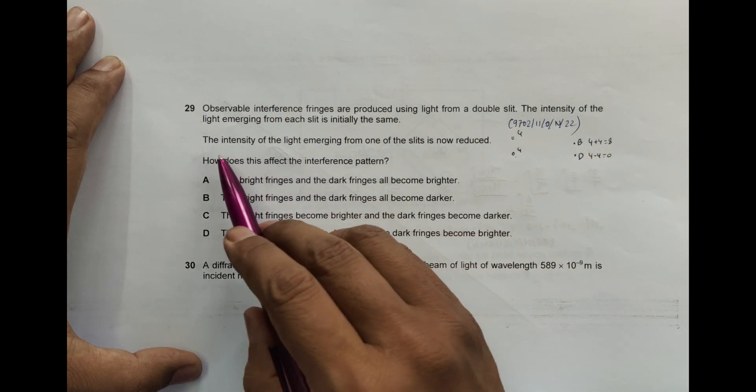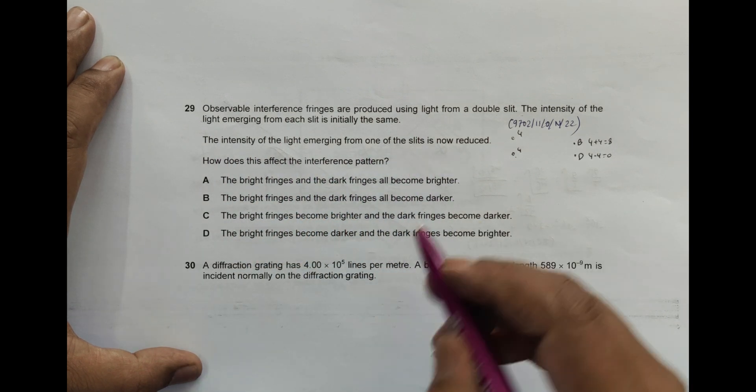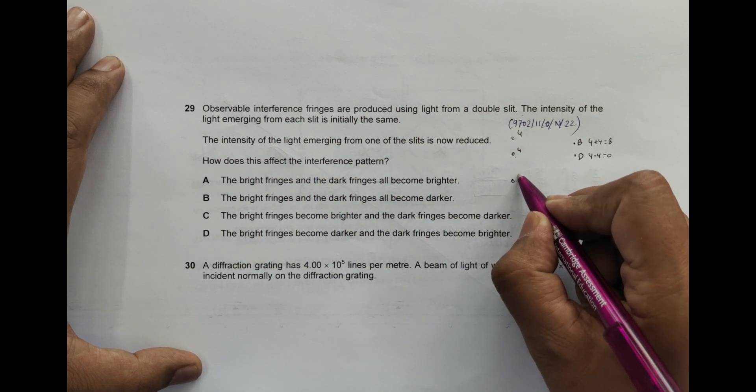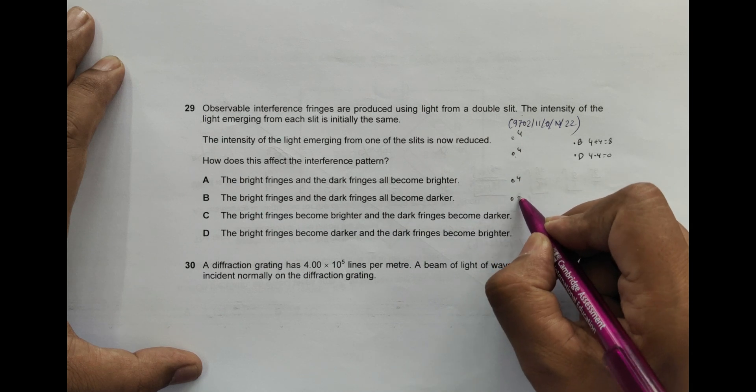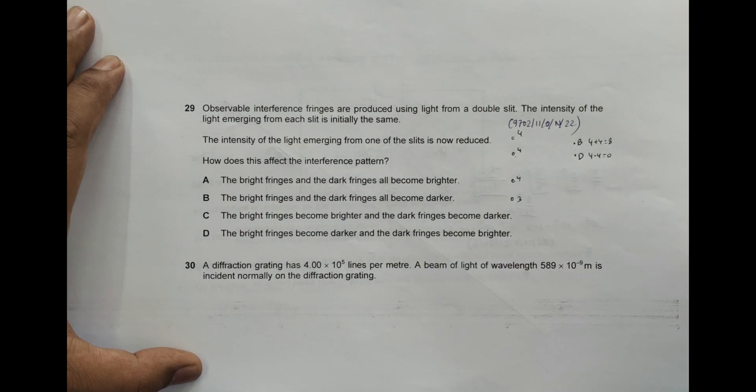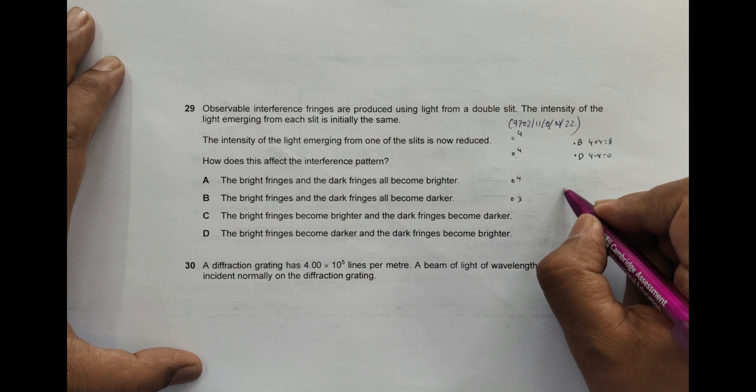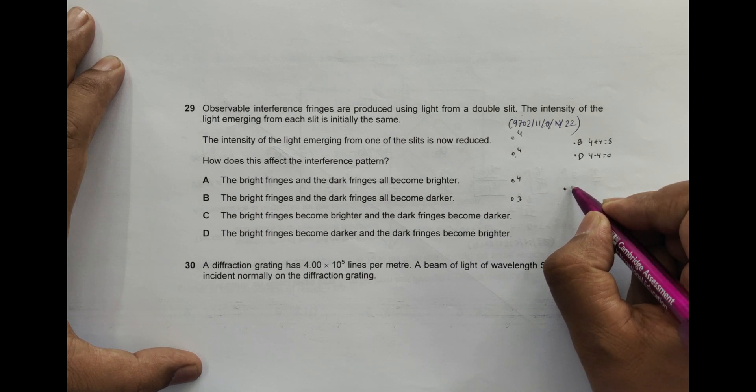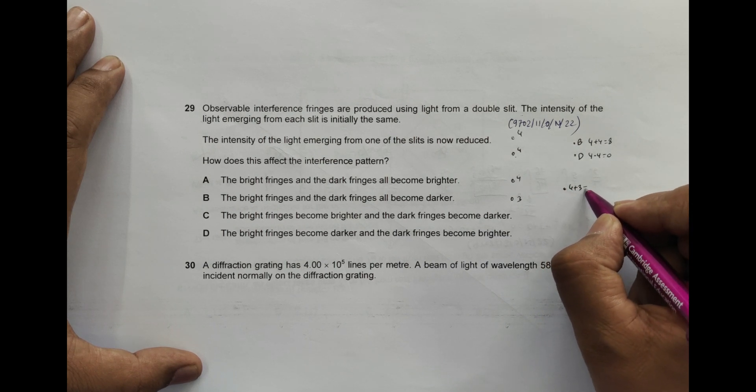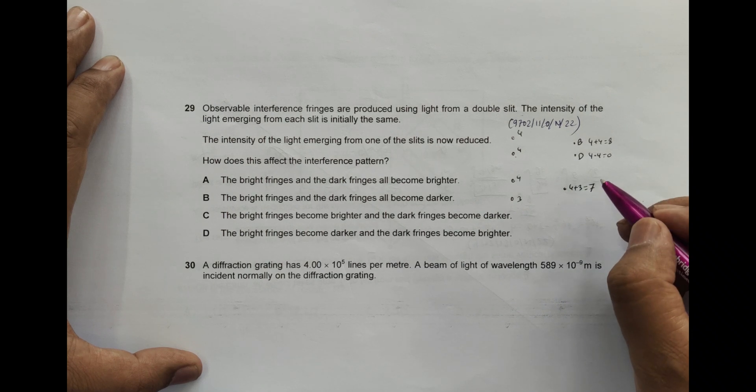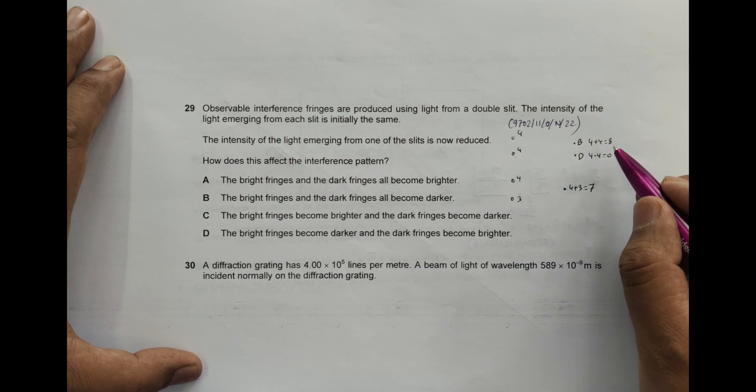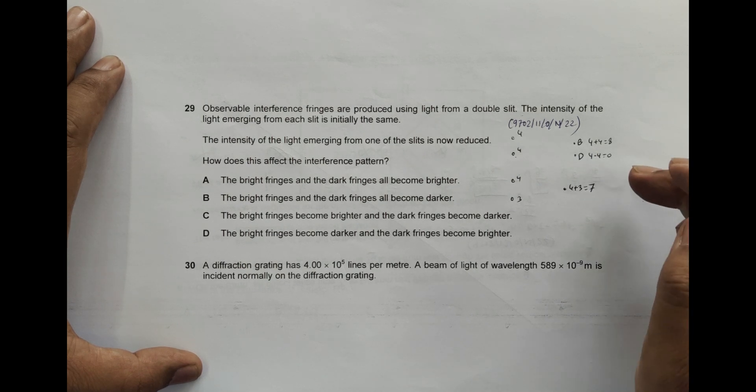Now the intensity of the light emerging from one of the slits is reduced. So now what we have is four and this becomes three. In the bright region now, the energy will be 4 plus 3 equals 7. That means the brighter one has got its brightness decreased, it becomes darker. The brighter one becomes darker.